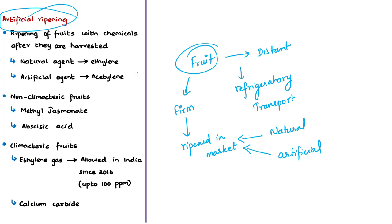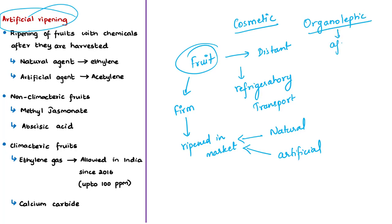Artificial ripening promotes ripening and induces color changes to the fruit. The issue is that the cosmetic quality of artificially ripened fruits is improved — meaning physical appearance like color, shape, and size — but the organoleptic quality, which means taste, aroma, flavor, and texture, is affected. So what chemicals are used in the artificial ripening process? For non-climacteric fruits, chemicals used include methyl jasmonate and abscisic acid. For climacteric fruits, ethylene gas is used for artificial ripening.